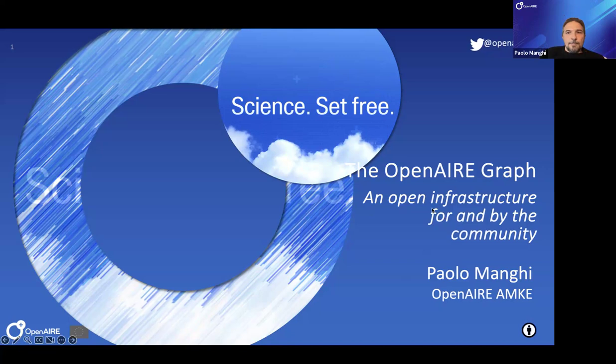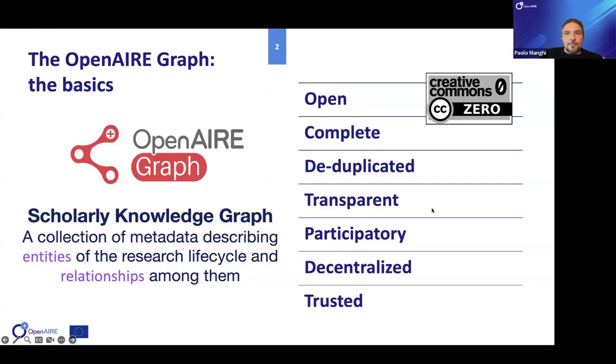The presentation is about the OpenAIRE Graph. I will try to highlight how our graph is quite unusual in the way it commits to the community and in the way the community can interact with it — or actually be part of its whole operation and production. Let me first start with a general description of what the graph is.